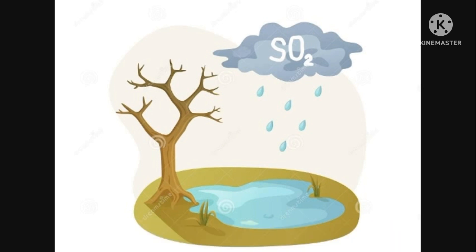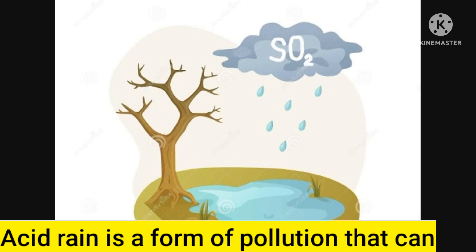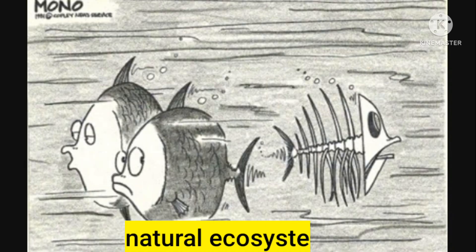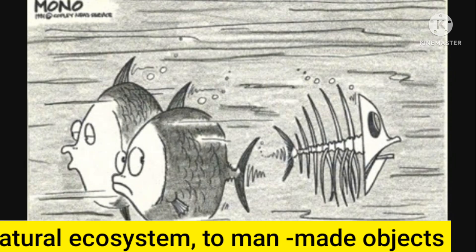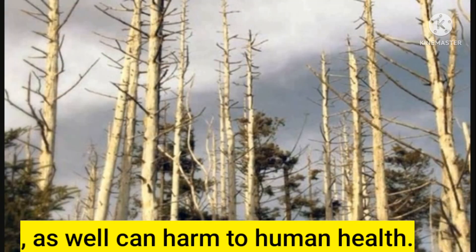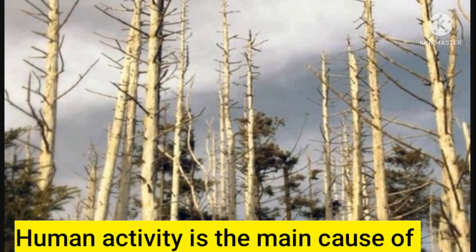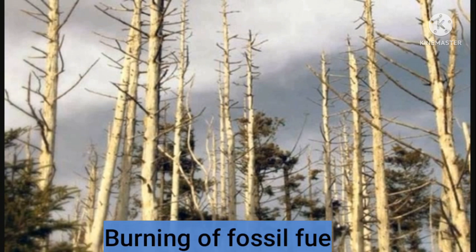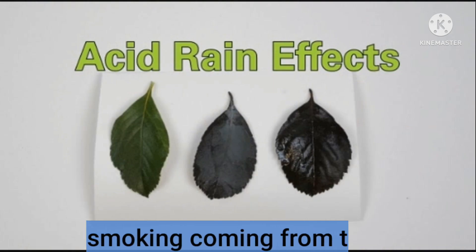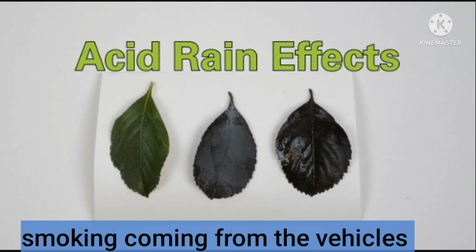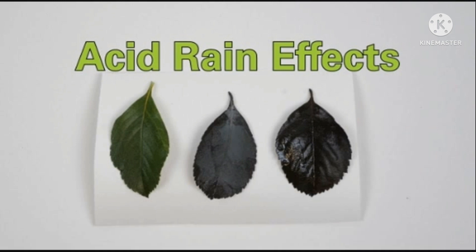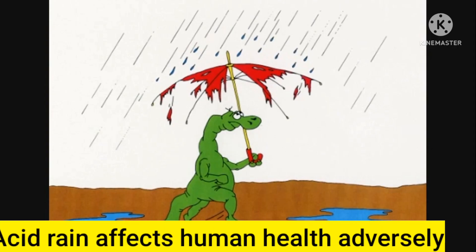Acid rain is a form of pollution that can cause a lot of damage to natural ecosystems and man-made objects, and can also harm human health. Human activity is the main cause of acid rain. Burning of fossil fuels, smoke coming from vehicles, and chemicals released from factories are some examples.